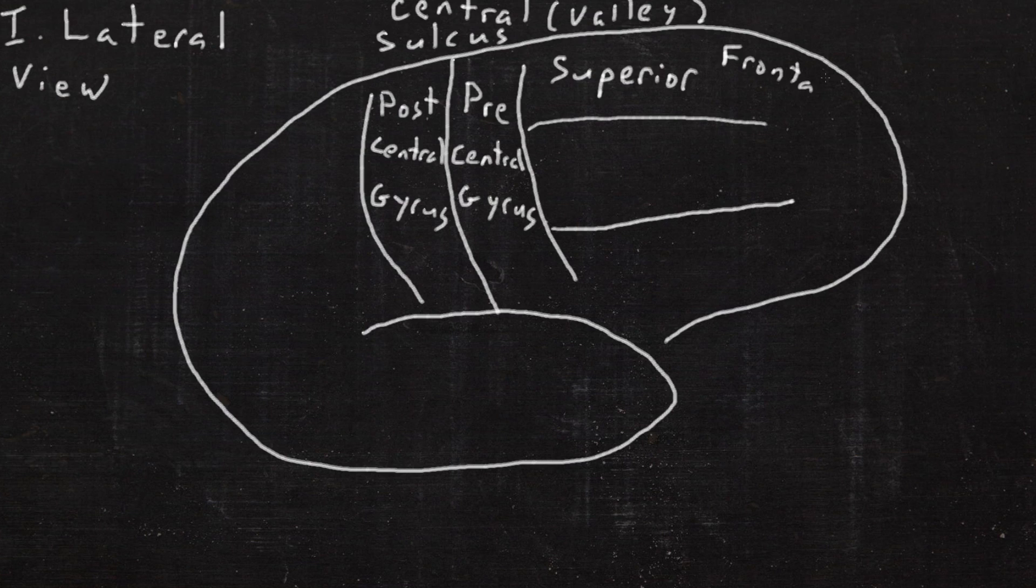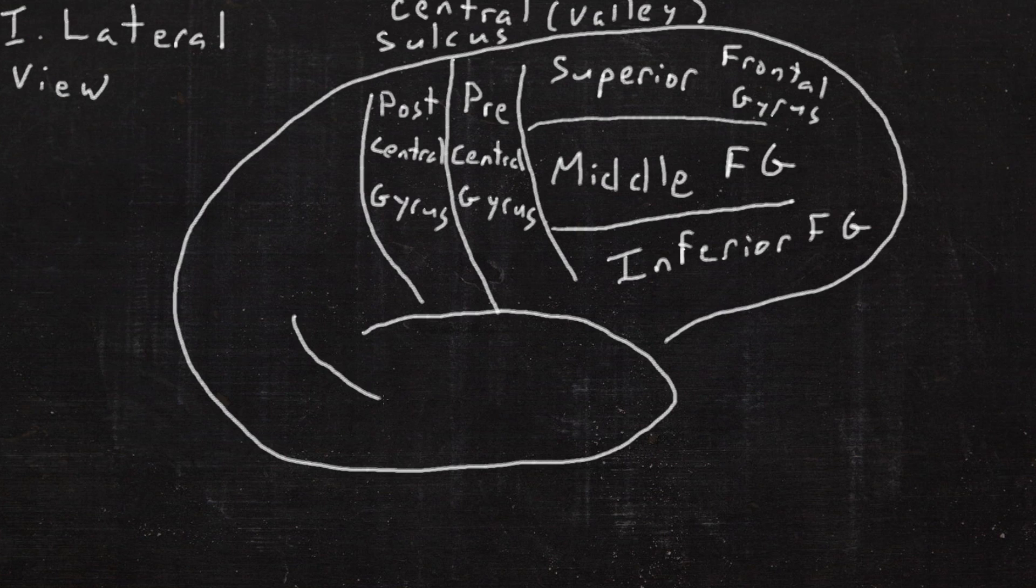The frontal lobe has three divisions, superior, middle, and inferior frontal gyri.